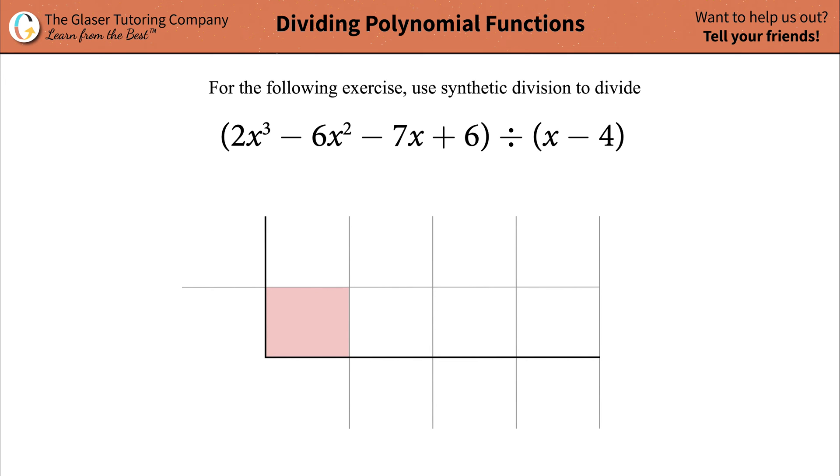Howdy folks, Andrew here. Today I would like to teach you how to do synthetic division on the following problem. We got 2x cubed minus 6x squared minus 7x plus 6 is going to be divided by x minus 4.